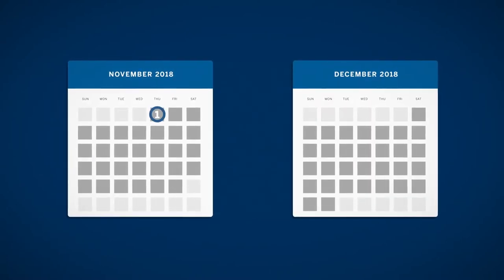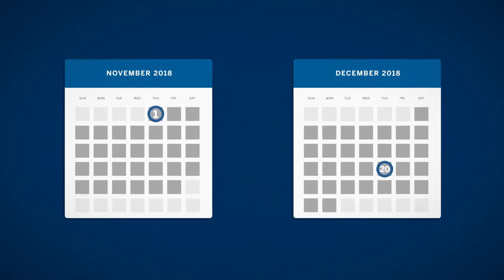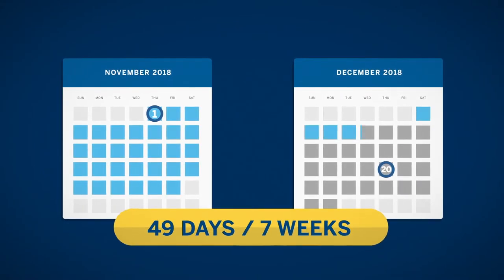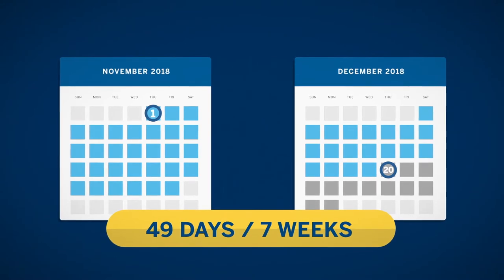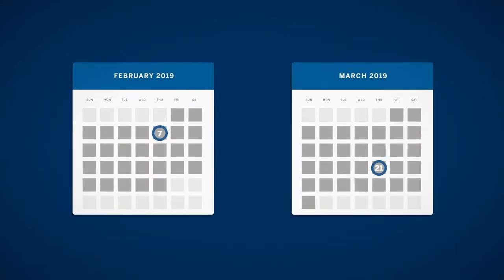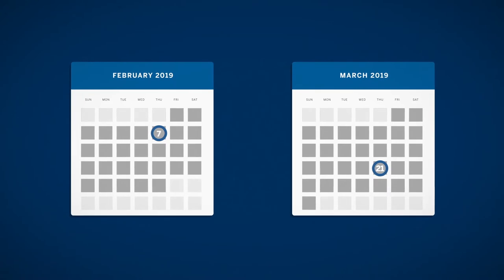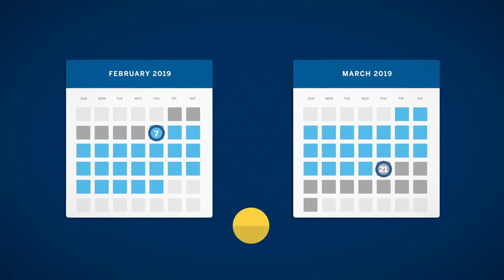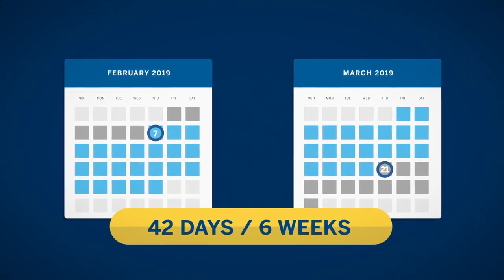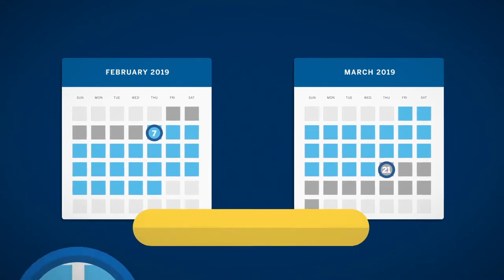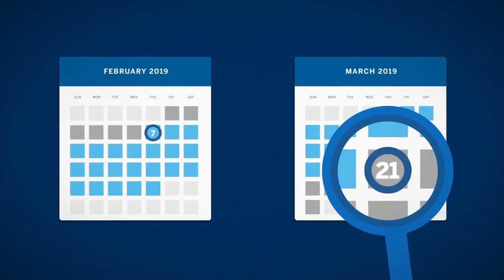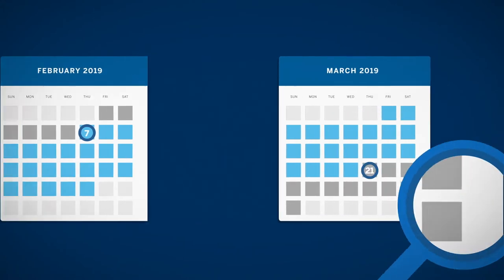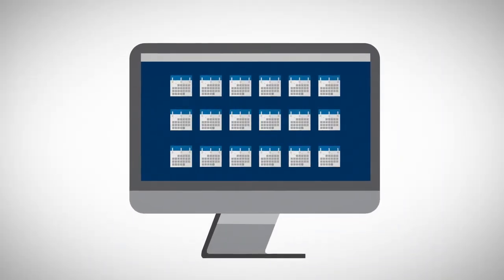For example, assume a November 2018 MPC SONIA contract. The actual day count between the 1st of November MPC meeting and the 20th of December MPC meeting is 49 days. That contract's compounding interest rate interval would be 49 days or 7 weeks. The February 2019 MPC contract covers the interval between the 7th of February 2019 and the 21st of March 2019 MPC meetings. The actual day count for this interval is 42 days or 6 weeks. The interval includes the first meeting date up to but not including the second meeting date in the interval period.